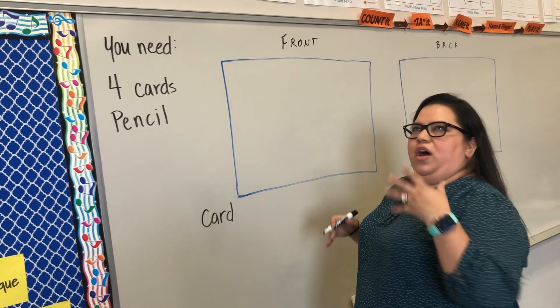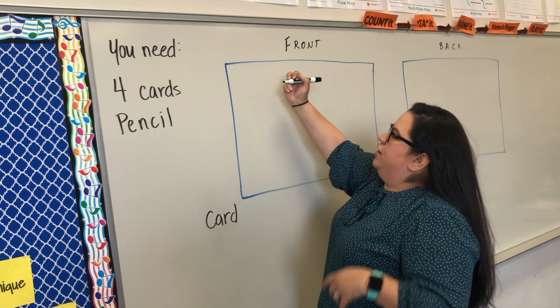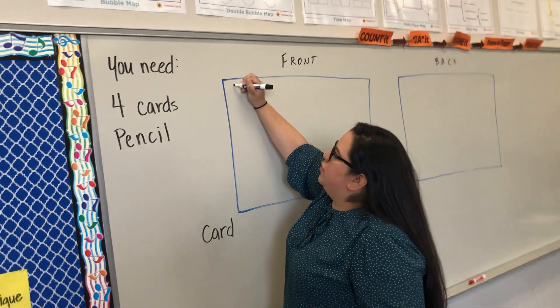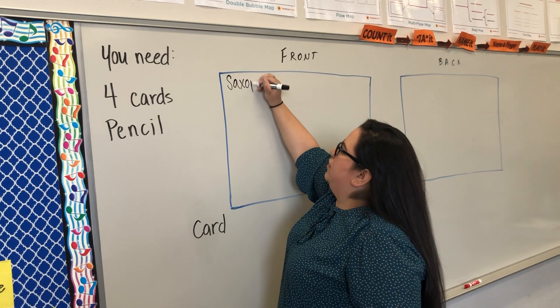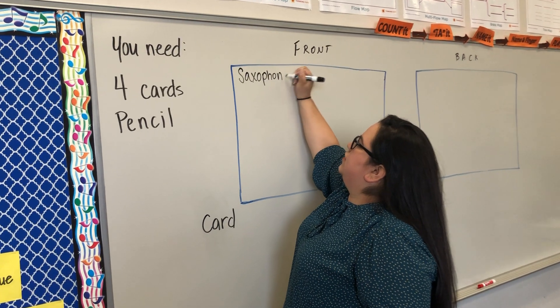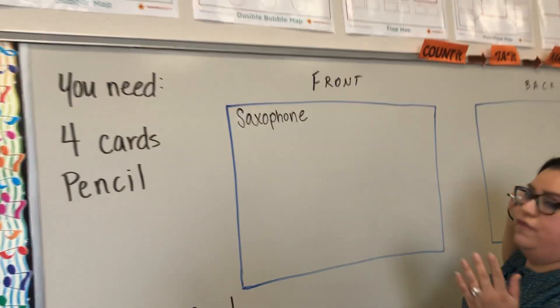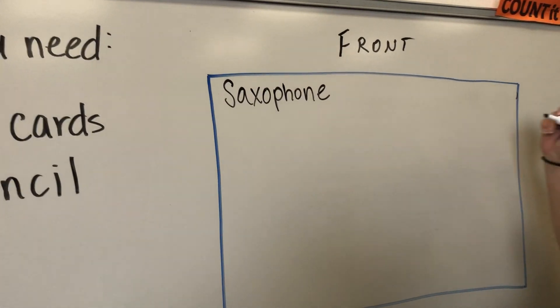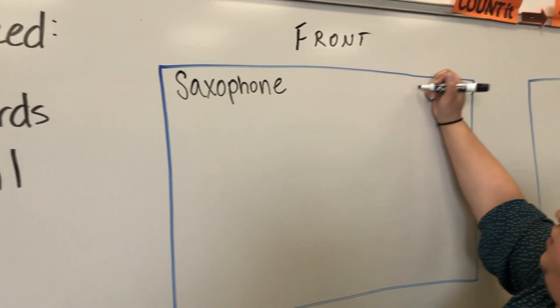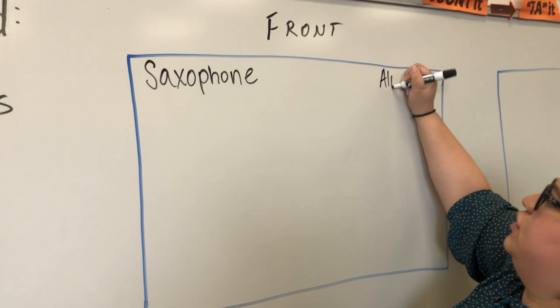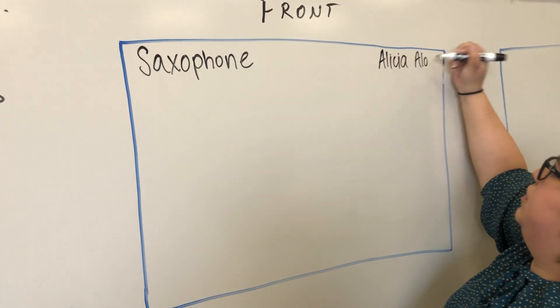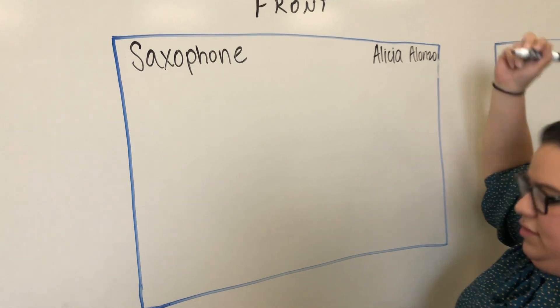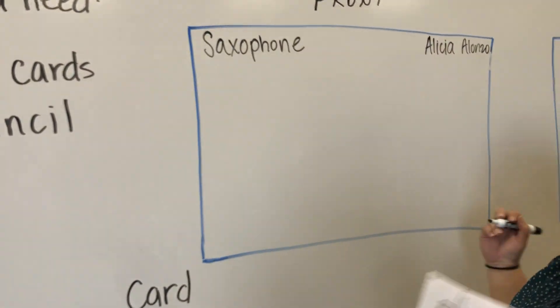We're going to prep those four cards, so you might have to push pause. In the top left corner, you're going to write 'Saxophone' - remember this is going on all four cards on the front where the blue lines are. Then on the other side at the right, you're going to write your first and last name. Remember, this is the side with the blue lines.